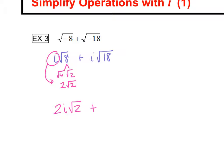Plus the square root of 18, we can break down with a 9 and a 2. So this is 3 square roots of 2, but then we have the i, so 3i square roots of 2.